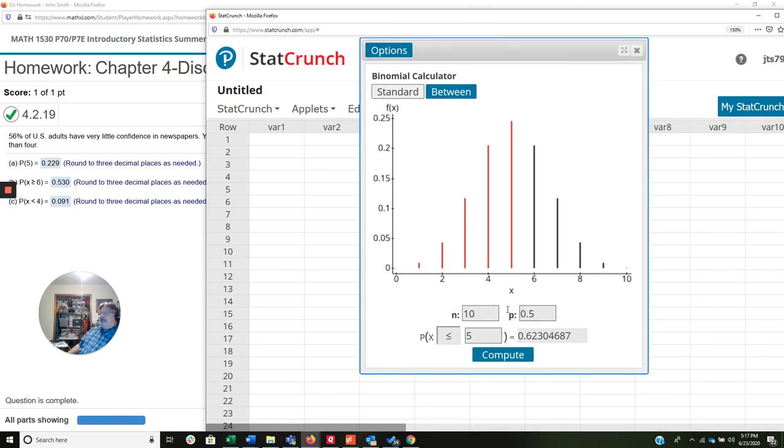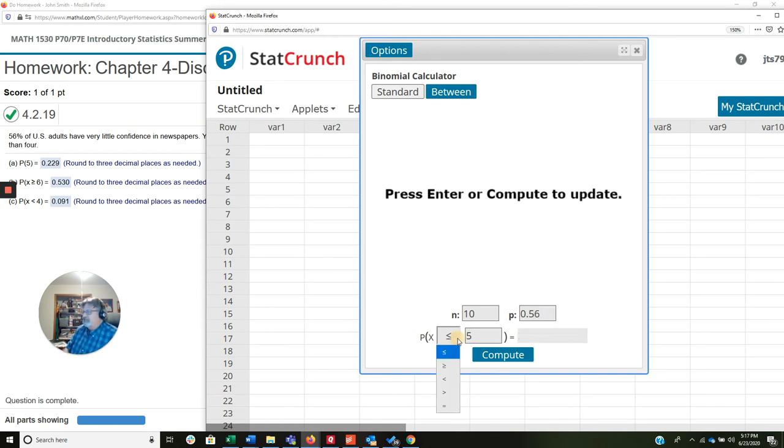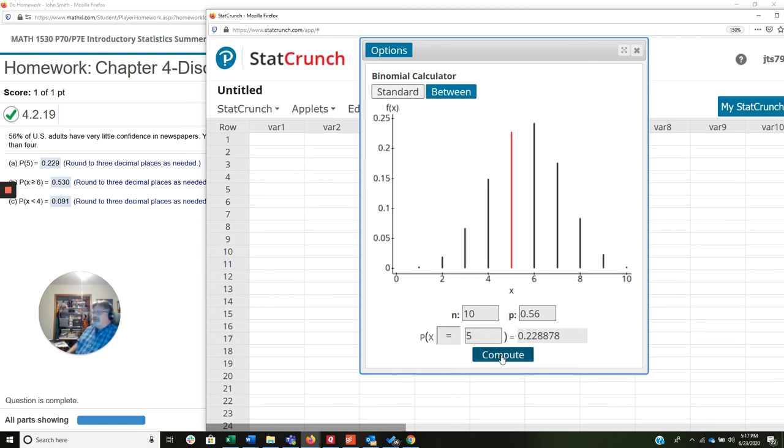The first one, we don't have to change N. The default is 10, and we know our N is 10. We calculated, and our P was 0.56, and the probability of equal to, that's the bottom one here, 5, and it computes. I didn't even have to click Compute. It's already there. And you notice that rounds to 0.229, which is that answer.